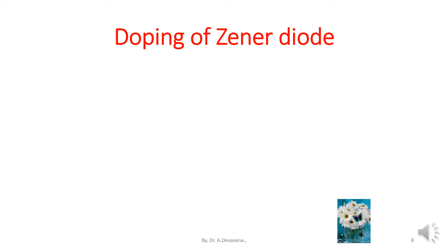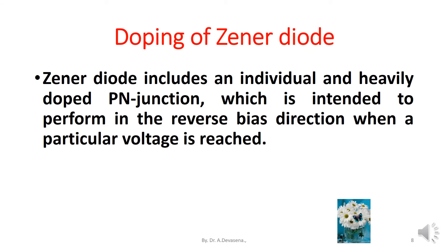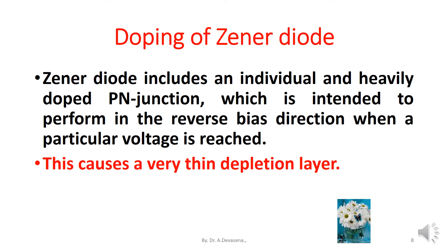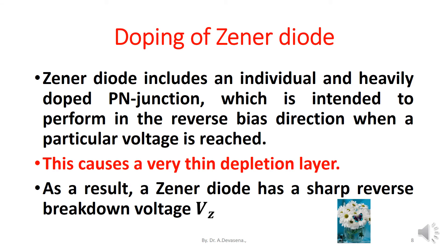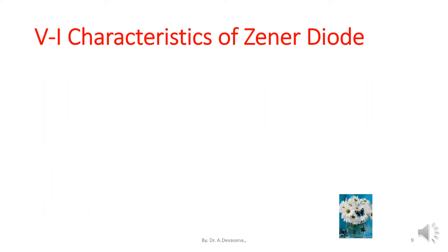Doping of Zener diode. The Zener diode includes a heavily doped P-N junction which is intended to perform in the reverse biased direction when a particular voltage is reached. This causes a very thin depletion layer. As a result, a Zener diode has a sharp reverse breakdown voltage V_Z.